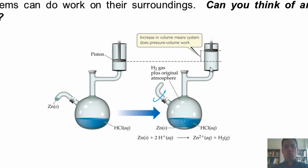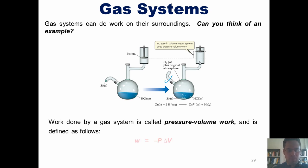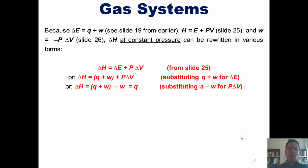So do gas systems do work as gas molecules are created and expand? Yes, they do. Now work that's done in a gas system is called pressure volume work and is defined mathematically as W, work in this case pressure volume work, equals negative P times delta V, where P equals pressure and change in volume delta V is equal to V final minus V initial. Now because delta E equals Q plus W, which we talked about in an earlier slide, and enthalpy equals energy plus pressure times volume, talked about in an earlier slide, and pressure volume work equals negative P times delta V, which we just barely talked about, delta H at constant pressure can be rewritten in various forms shown here.